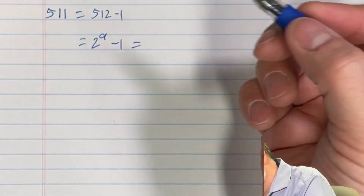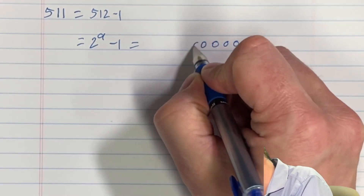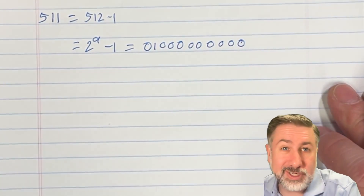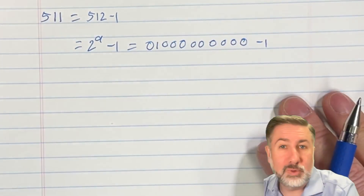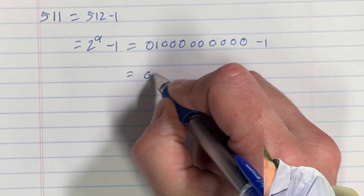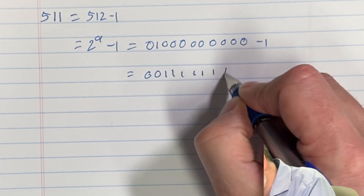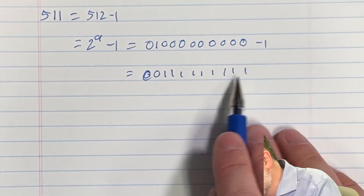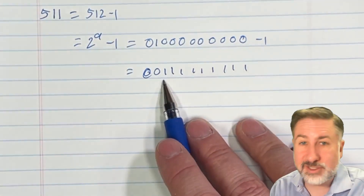What's 2 to the 9? That's a 1 followed by 9 zeros in binary — bit positions 0 through 9. Let's put another 0 there so we don't forget it's positive. So 2 to the 9 minus 1: we subtract, borrowing all the way down, and what we get is nine consecutive 1-bits with leading zeros — 0, 0, 1, 1, 1, 1, 1, 1, 1, 1, 1. That's 511. You can add them all up to confirm.